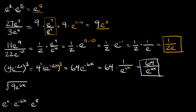Now we have a radical — we have the square root of 9e raised to the 6x. Notice that 9 is a perfect square, so I'm going to break these up into their own radicals and rewrite this as the square root of 9 times the square root of e to the 6x. The square root of 9 is equal to 3. Now the square root of e to the 6x — we can simplify this.